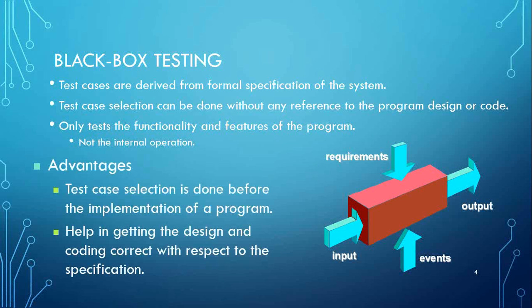The advantage of black-box testing is that test case selection is done before the implementation of the program. It helps in getting the design and coding correct with respect to the specification. If we have specifications already laid out and test cases created on top of that, we will know where exactly failures are. Catching failures ahead of time before we reach design and coding helps improve our architecture. Black-box testing puts a process in place to identify architectural, design, or code-related issues early, so corrections can be made in a timely manner and project time is utilized without constraint.